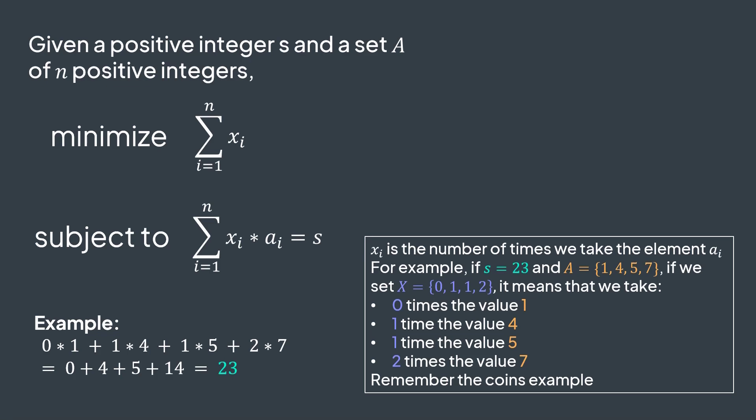And this particular problem can be solved with dynamic programming, by having a table that maps each value between 0 and s inclusive, to the minimum number of elements to reach it. We keep building it either from top to bottom if we use memoization, or bottom to top if we use tabulation.